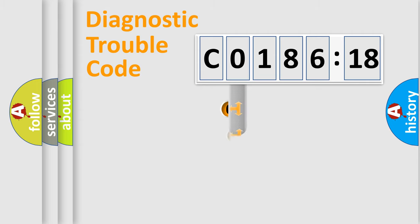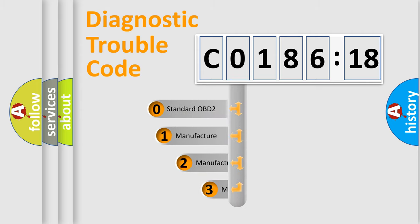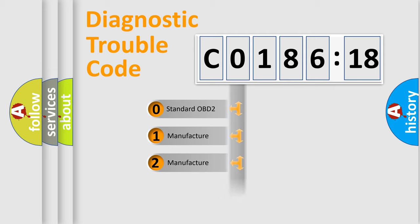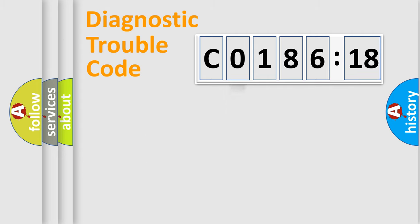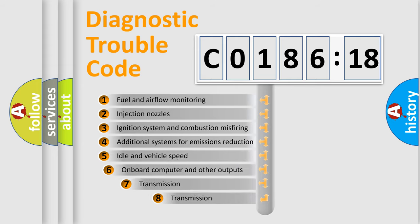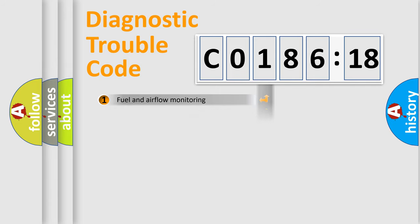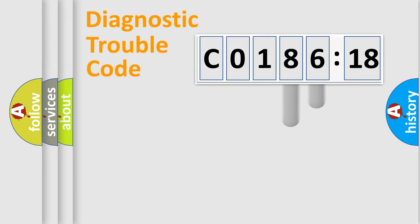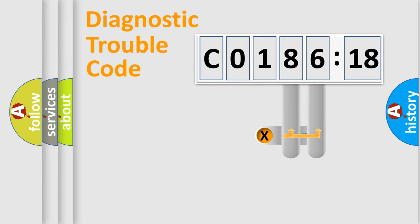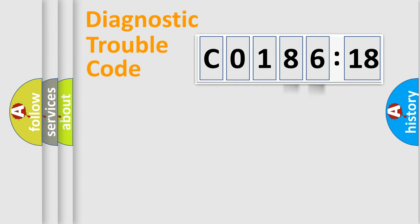This distribution is defined in the first character of the code. If the second character is expressed as 0, it is a standardized error. In the case of numbers 1, 2, or 3, it is a more manufacturer-specific expression of a car-specific error. The third character specifies a subset of errors. The distribution shown is valid only for the standardized DTC code. Only the last two characters define the specific fault of the group.